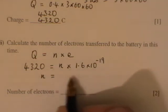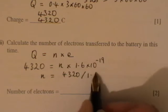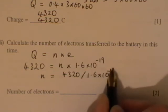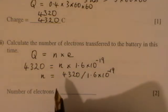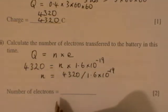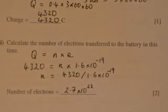Therefore the number of electrons is equal to 4320 divided by that 1.6 times 10 to minus 19, and that gives us then a value of 2.7 times 10 to the 22. So 2.7 times 10 to 22 is the number of electrons transferred in that short period of time.